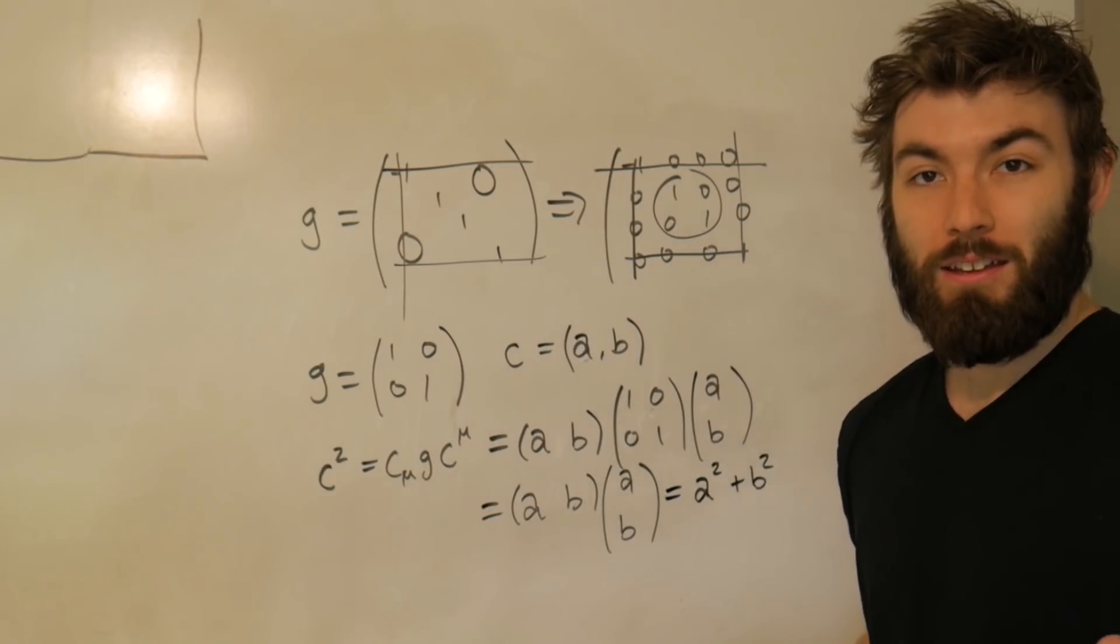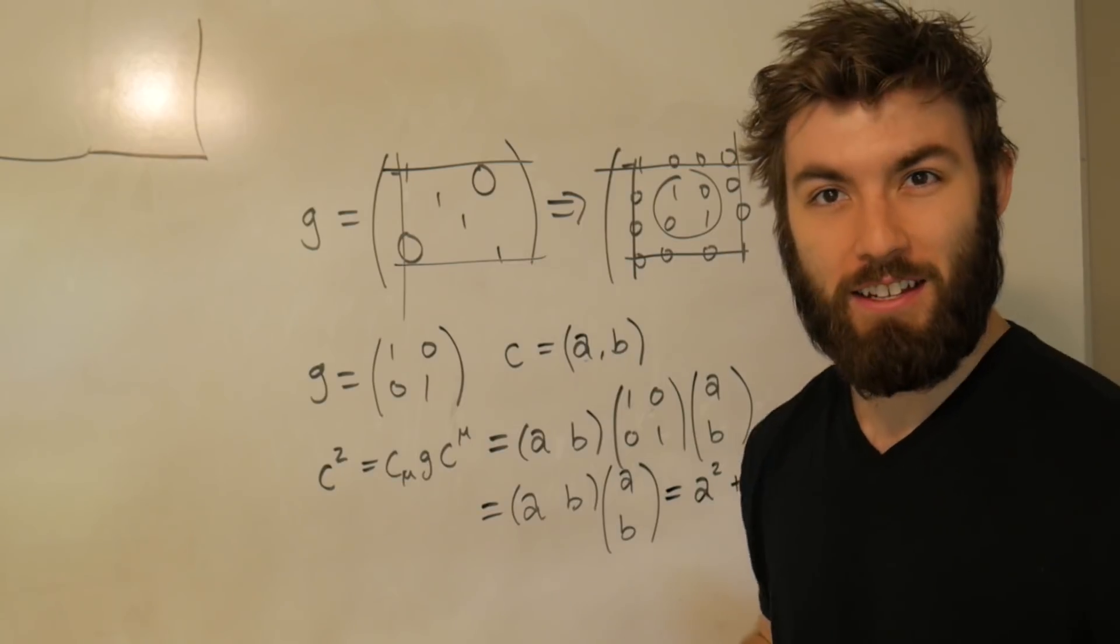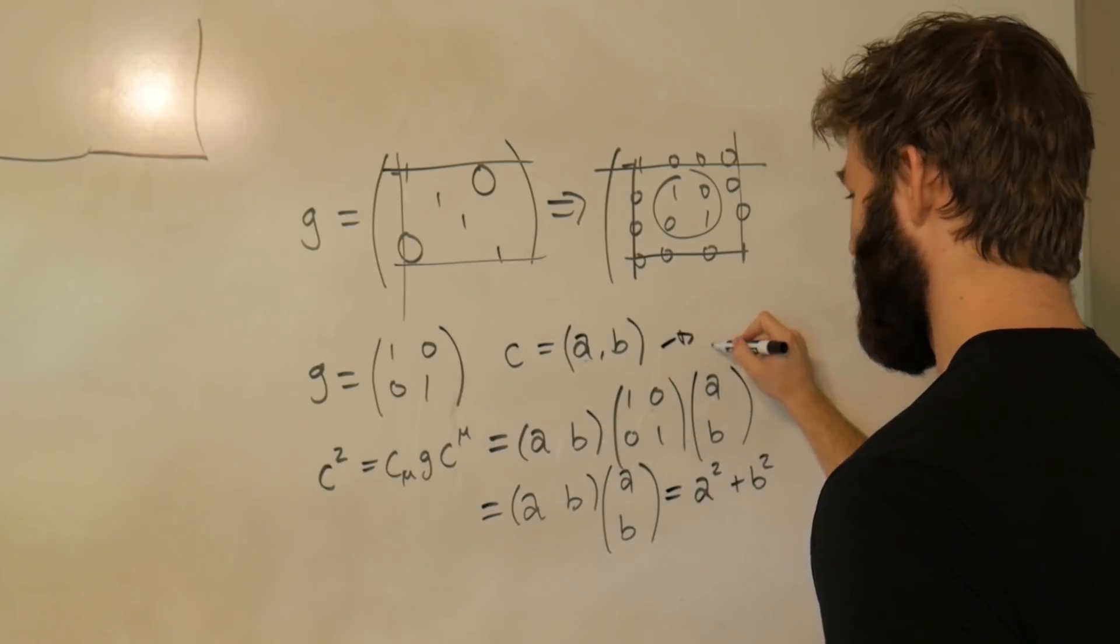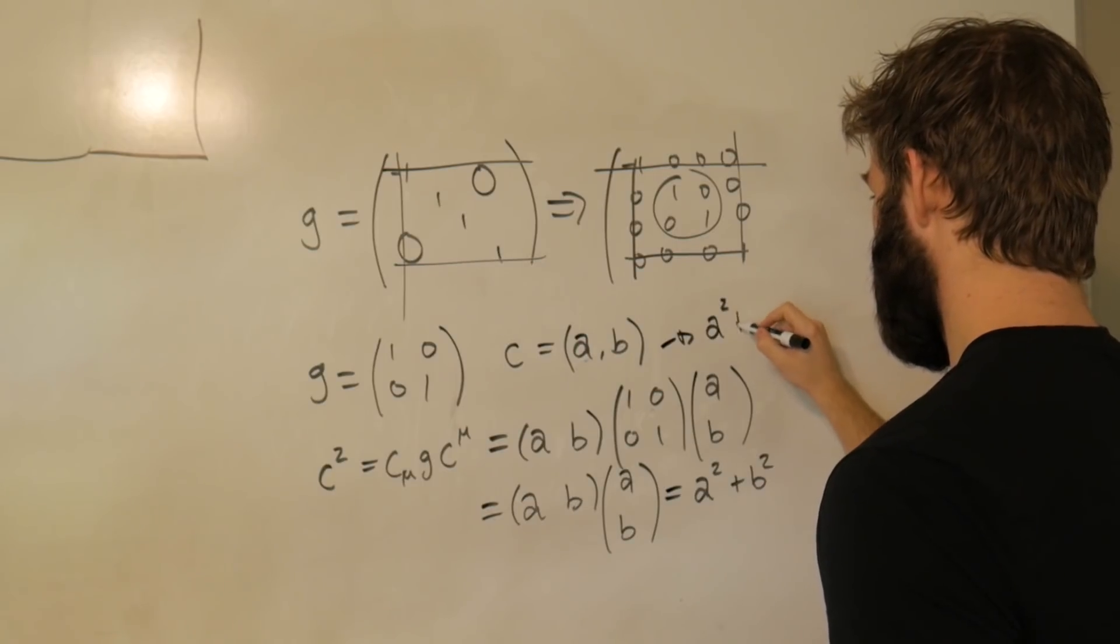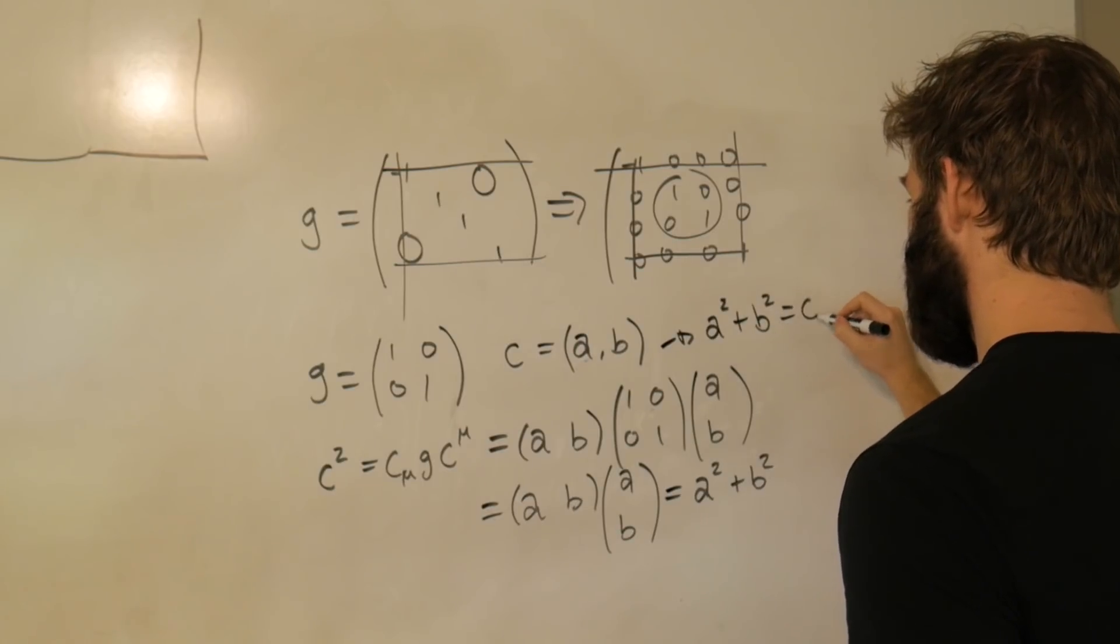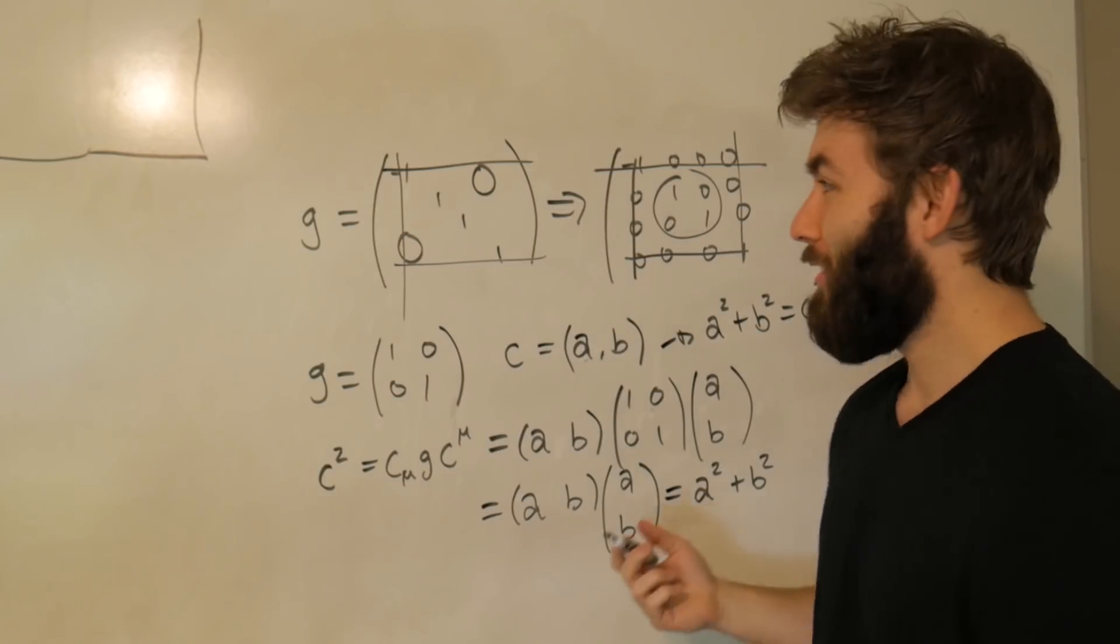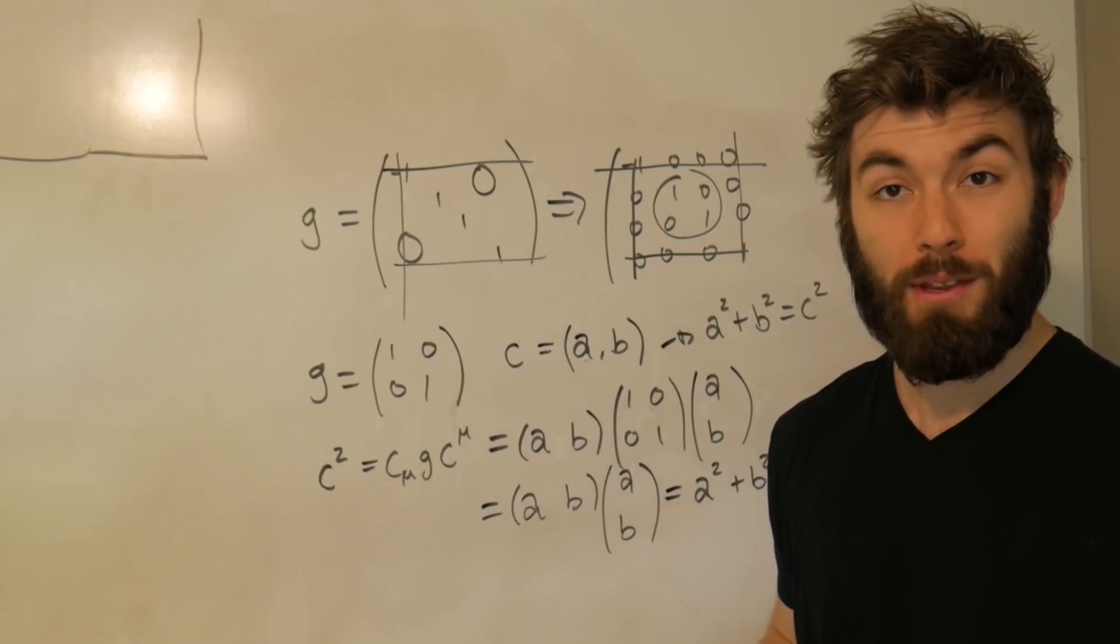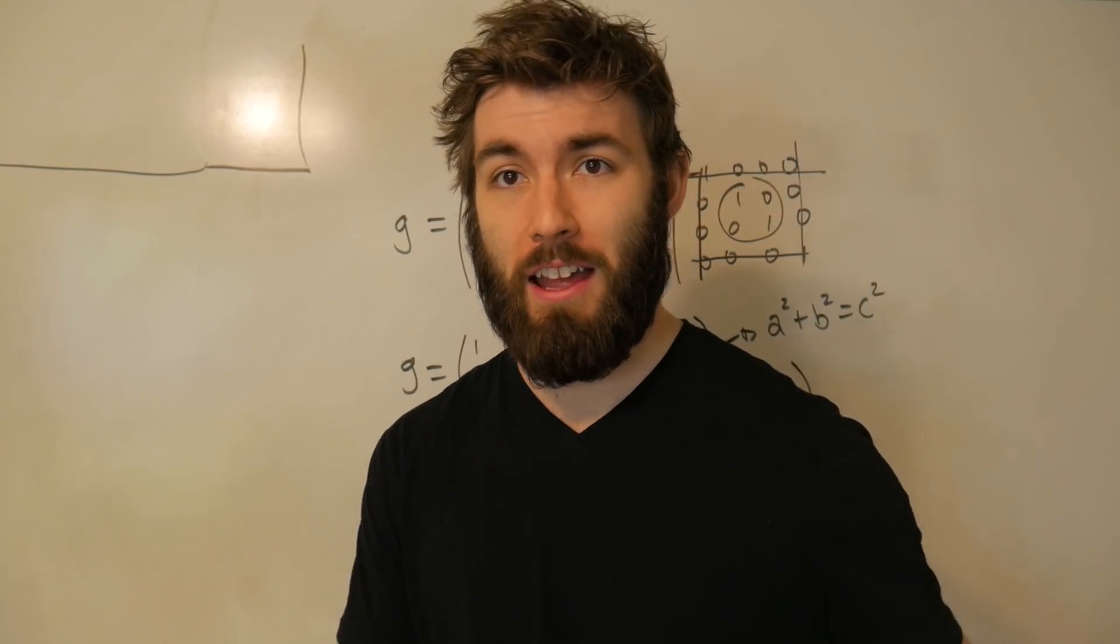So in a very sort of pedantic kind of way, what we just showed is that a squared plus b squared is equal to c squared. So it's the vector way of coming up with the Pythagorean theorem. I hope you guys enjoyed this little ad hoc break into a math video because I didn't have much to talk about today. Let me know in the comments section if you did, and I'll see you guys there.